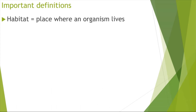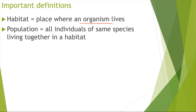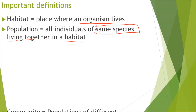A habitat is basically where an organism lives. Next is the population, which is all the individuals of the same species living together in a habitat. What you should keep in mind is that it's the same species — we do not change the species. For example, if the habitat is a forest and the species we're considering is rats, then monkeys would not be considered in the population — it would only be rats.